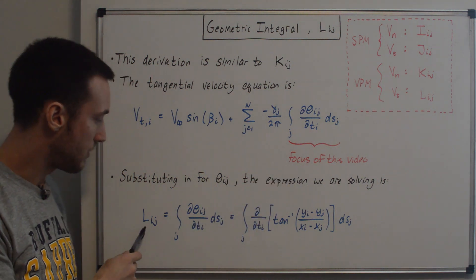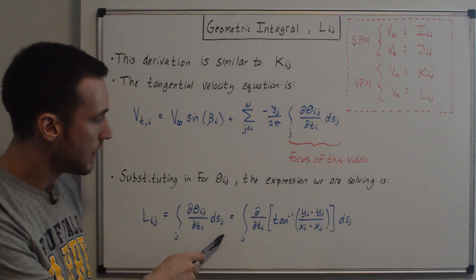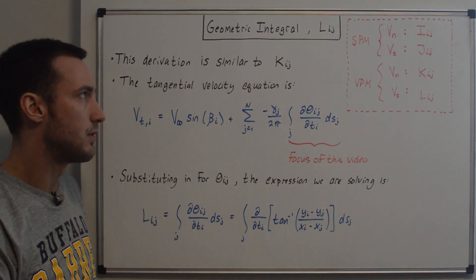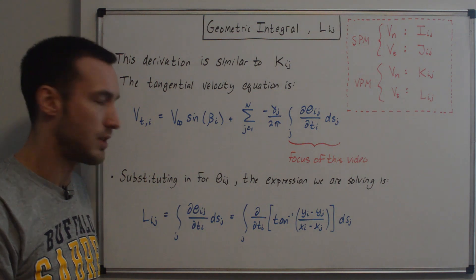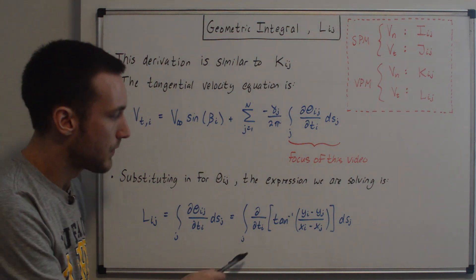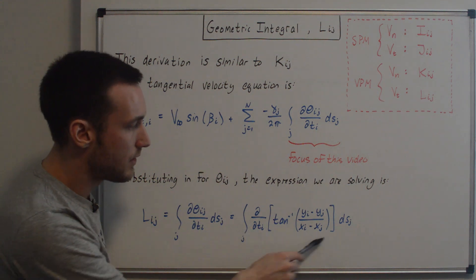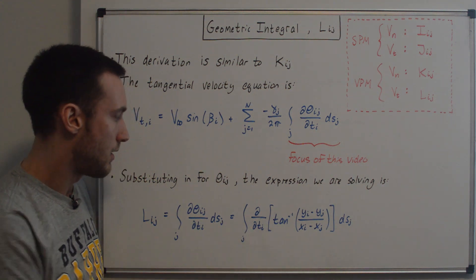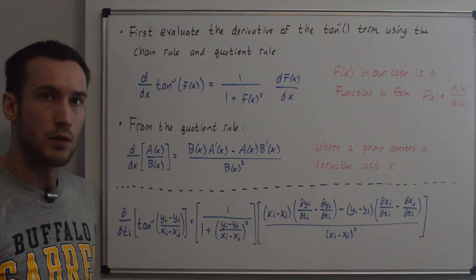Down here I'm defining what the L_ij term is — it's just that integral term. We can plug in for theta_ij based on the K_ij video, where it was defined as the angle between the i-th and j-th panel. So we have the d/dT_i of theta_ij, and that is what we're evaluating to get the L_ij term.